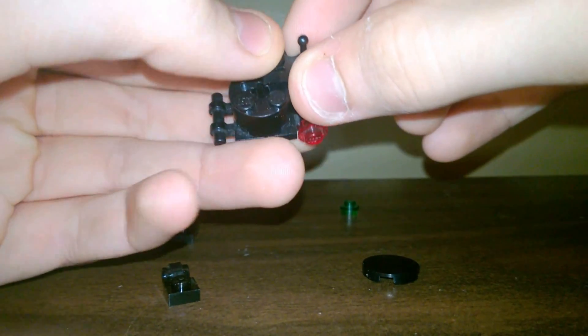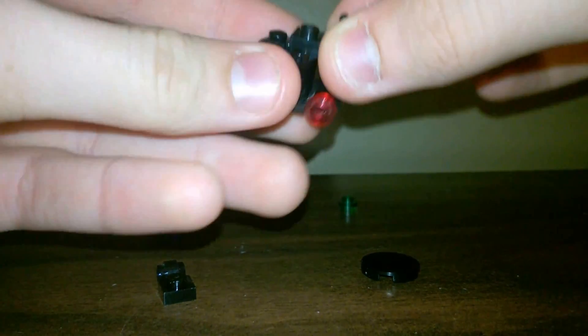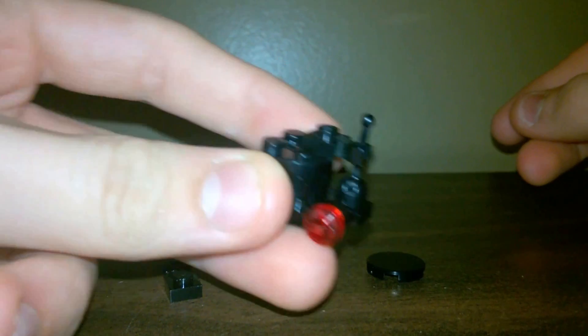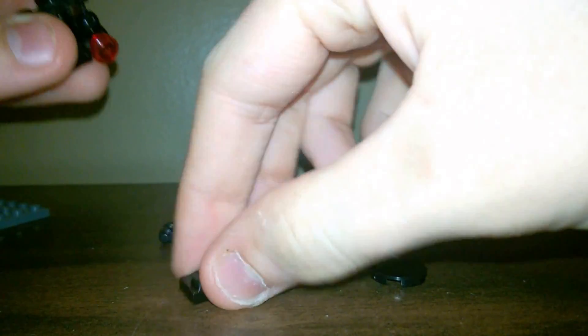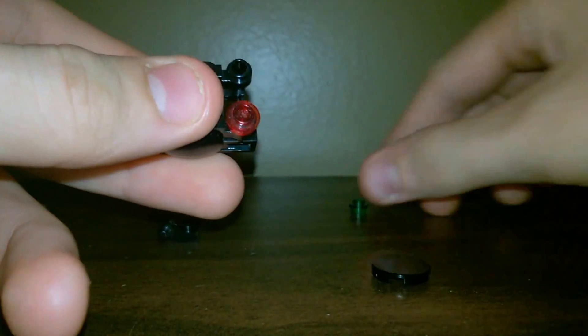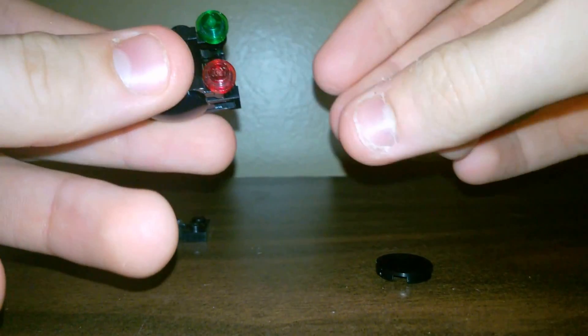Then we just need a 1x1 plate with a clip at the end of it. There you go. And this little piece right there at the green light.